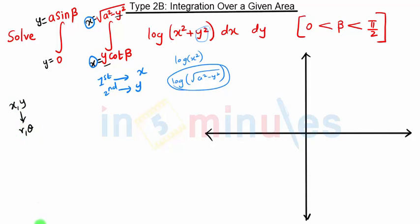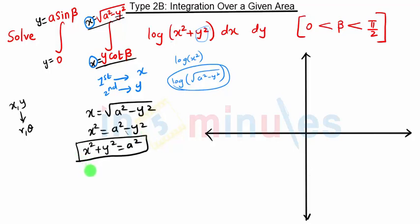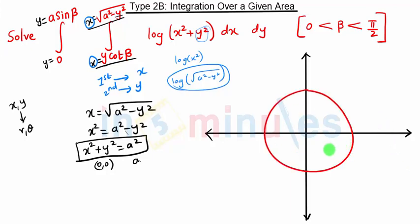Before changing Cartesian coordinates into polar coordinates, let's understand what these limits represent geometrically. Consider the upper limit: x equals root of (a squared minus y squared). Squaring both sides gives x squared equals a squared minus y squared, which rearranges to x squared plus y squared equals a squared. This is nothing but the equation of a circle whose center is the origin and radius is a. We draw this circle with radius a.